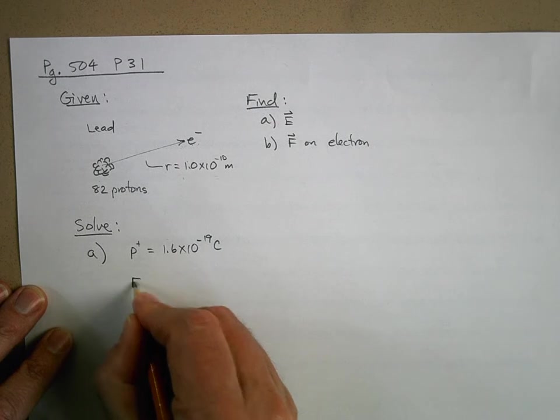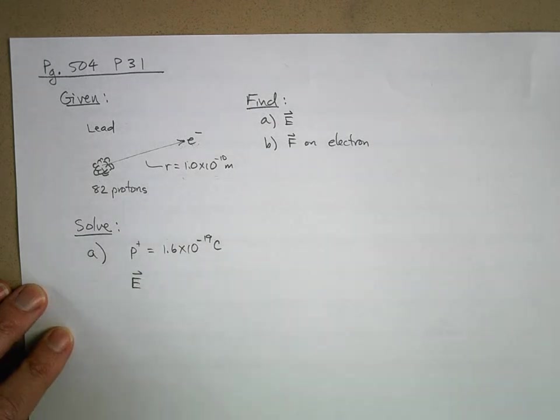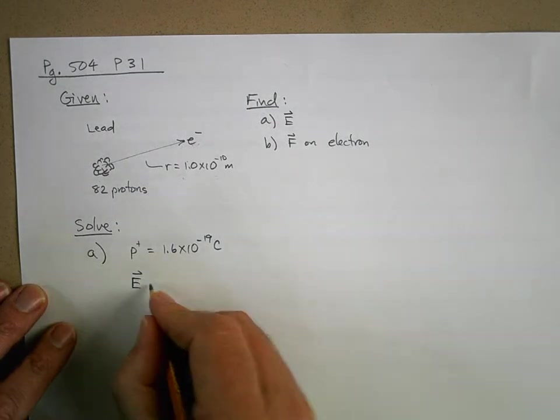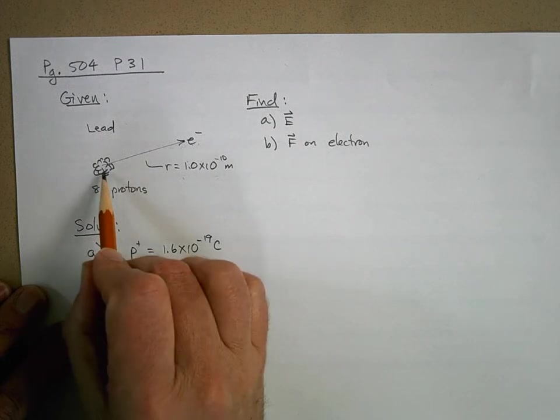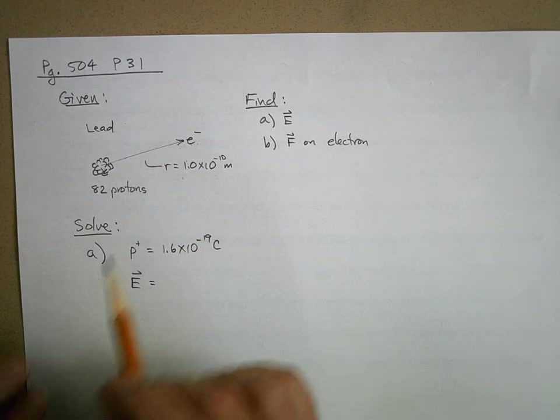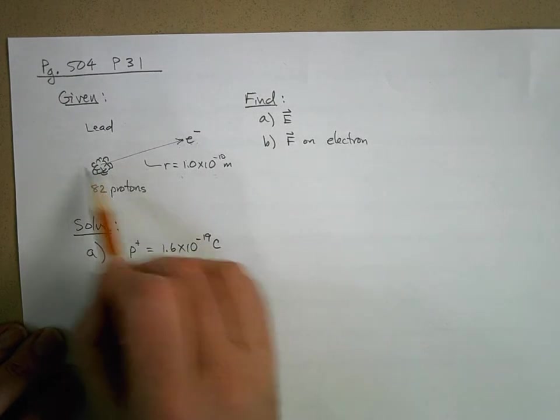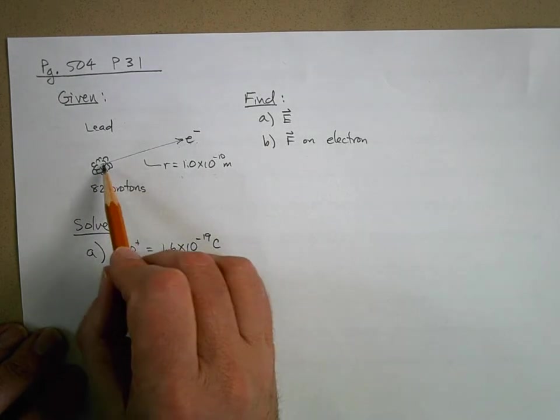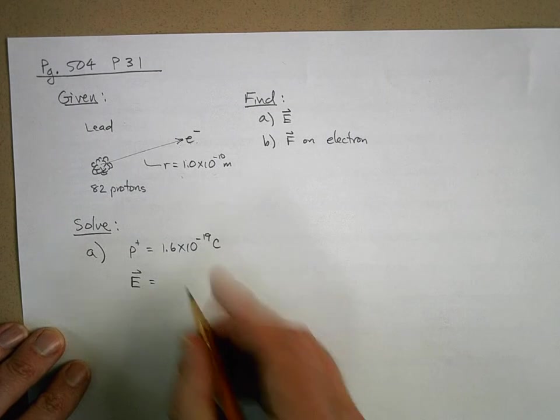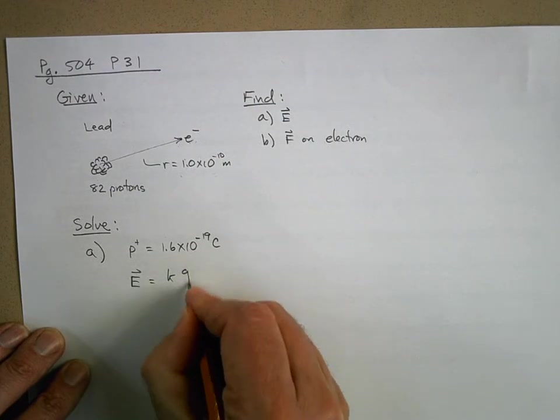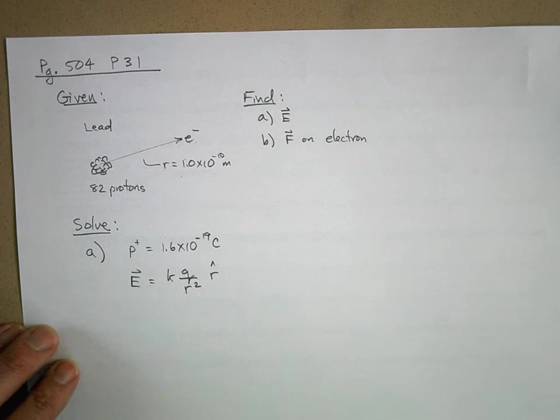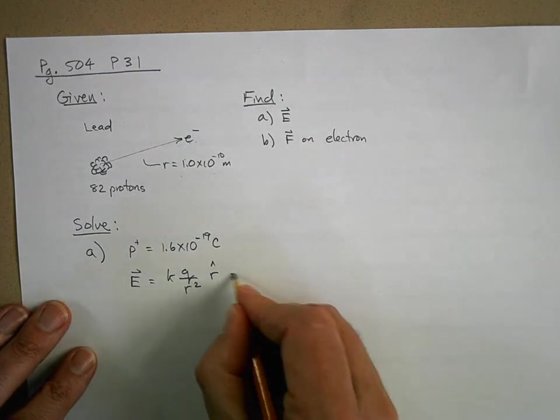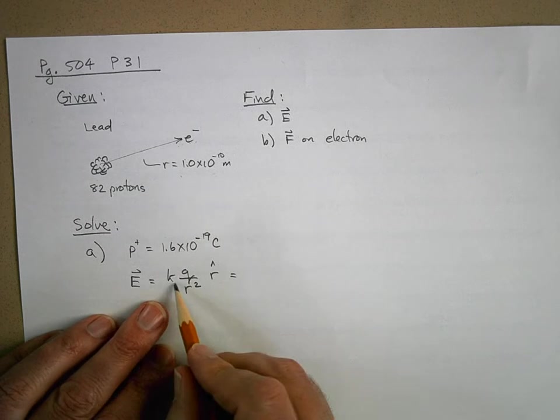Now, if we want to know the electric field, the equation for an electric field for a little bundle of protons like this that are all concentrated at a point in space or with spherical symmetry like this is k q over r squared in the r hat direction. So now we just need to plug in our values here.